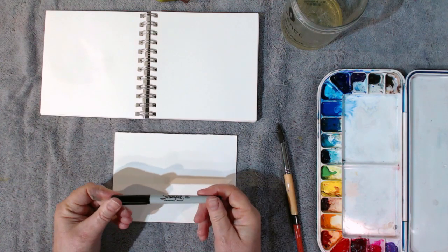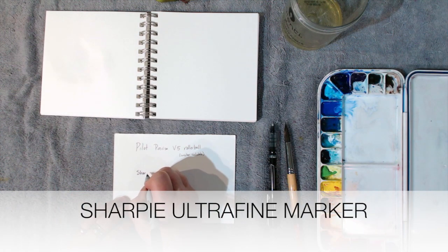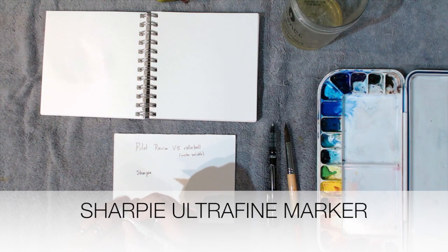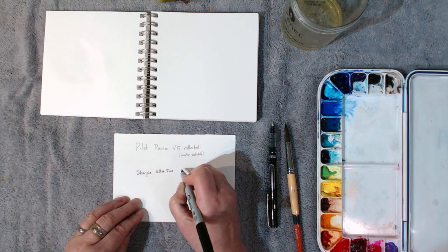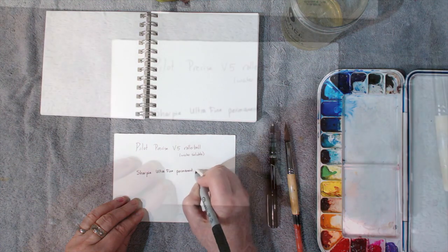You'll need for this a pen that has waterproof ink. Probably one of the easiest ones to find is a Sharpie marker. The ultra-fine Sharpie marker has a fine enough point for sketching, so you might want to start with that to see if you like this technique.